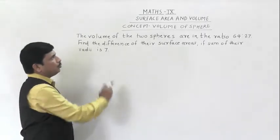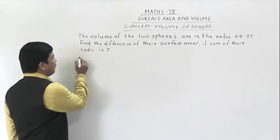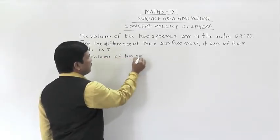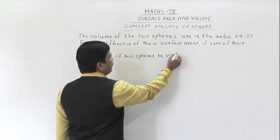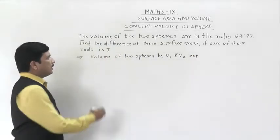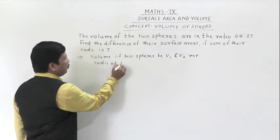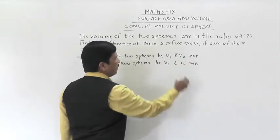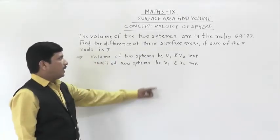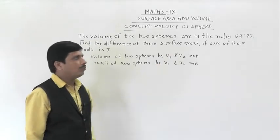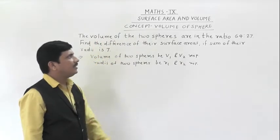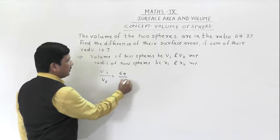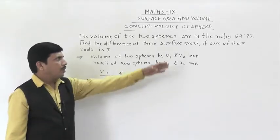What is given? The volumes of the two spheres are in the ratio 64 is to 27. We will consider the volumes of the two spheres as V1 and V2, and the radii of the two spheres as R1 and R2 respectively. So V1 upon V2 is equal to 64 upon 27.